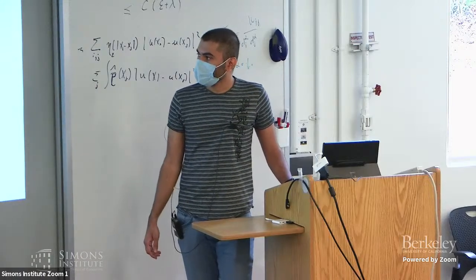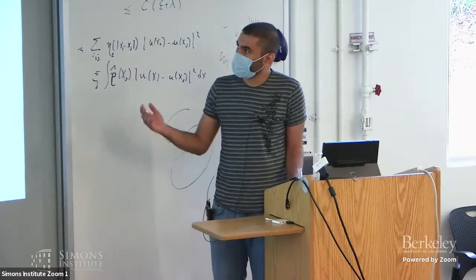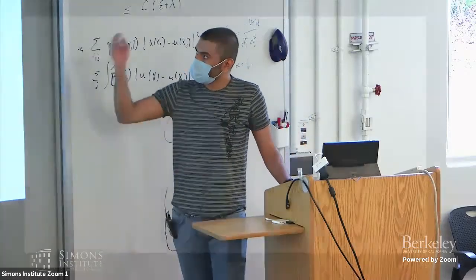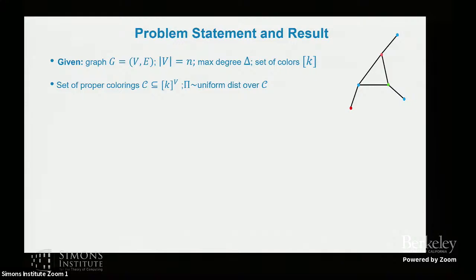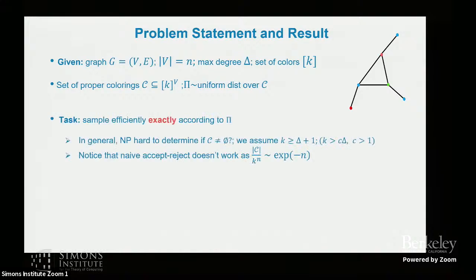We are given a graph on n vertices of max degree delta and we are given a set of colors k. We want to sample uniformly from the set of all proper colorings of this graph, so basically a coloring in which two neighbors don't get the same color. And the thing is that I want to emphasize the word exactly. I want to sample exactly according to the distribution pi. And of course we know this is an NP-hard problem to even determine whether this set C is empty or not, which is the set of all proper colorings.